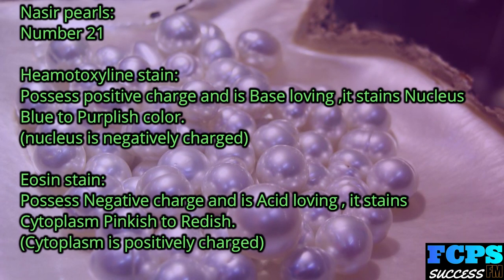Nasir Pearl number 21: Hematoxylin stain possesses a positive charge and is base-loving; it stains the nucleus blue to purplish color — the nucleus is negatively charged. Eosin stain possesses a negative charge and is acid-loving; it stains the cytoplasm pinkish to reddish — the cytoplasm is positively charged.